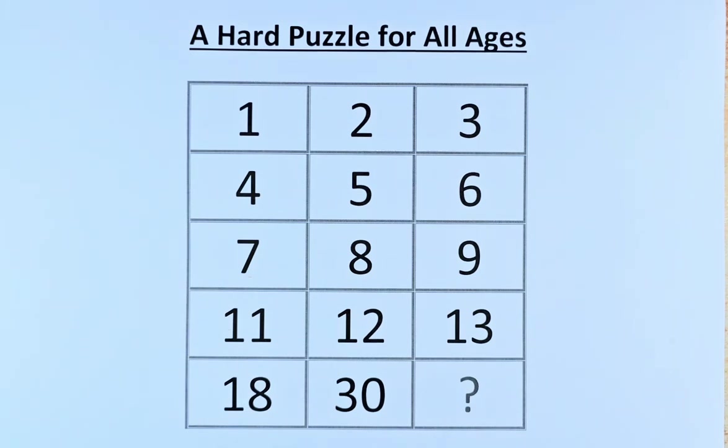Welcome back to the solution of this rather hard puzzle for all ages. The numbers are straightforward. First row, 1, 2, 3.